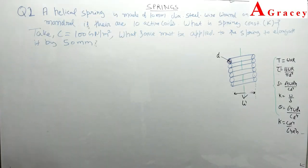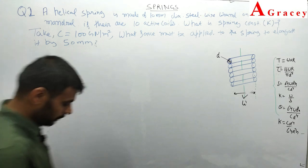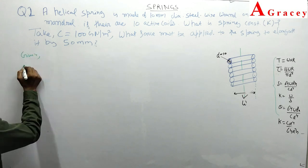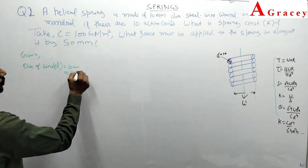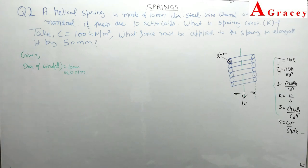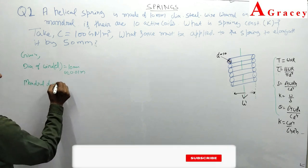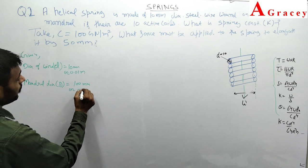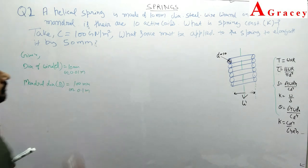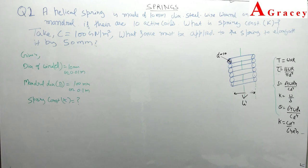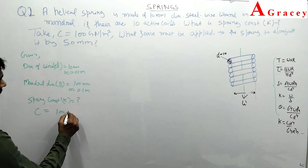A helical spring is made of 10 mm diameter wire, so d = 10 mm = 0.01 m. It is wound on a 100 mm diameter, so mean diameter D = 100 mm = 0.1 m. We have to find the stiffness (spring constant k) and determine what force must be applied.